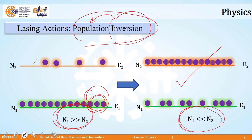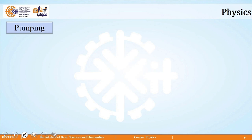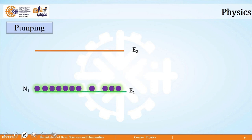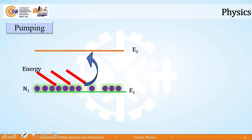To achieve population inversion, we need to do pumping. From a stable state, atoms will not by themselves go to an unstable excited state. So we need to supply some external energy. By absorbing this energy, atoms from the ground state get lifted and transited to the excited state, achieving the population inversion condition. Pumping is the process in which we provide energy so that atoms from the ground state get excited to a higher energy state and population inversion is achieved.